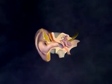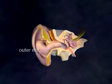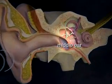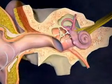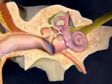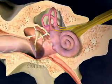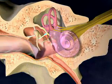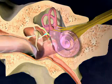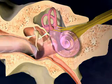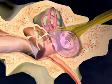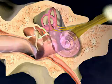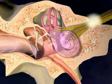When sound waves reach the ear, they are gathered by the funnel-shaped outer ear and channeled into the middle ear. At the opening to the middle ear, sound waves hit the tympanic membrane or eardrum. The resultant vibrations then travel through the middle ear and the fluid-filled inner ear, where they are converted to signals that are sent to the brain.